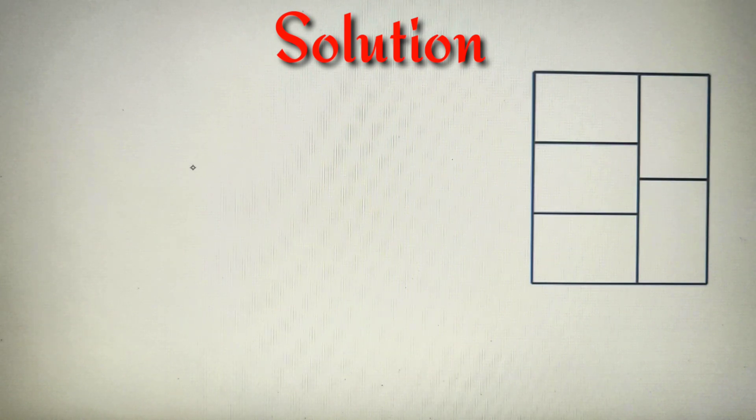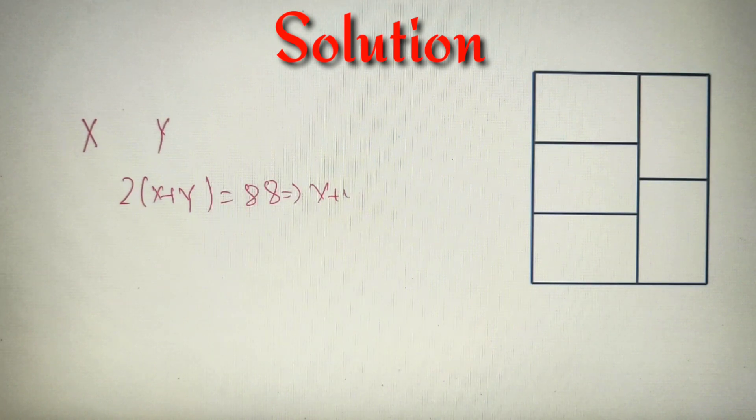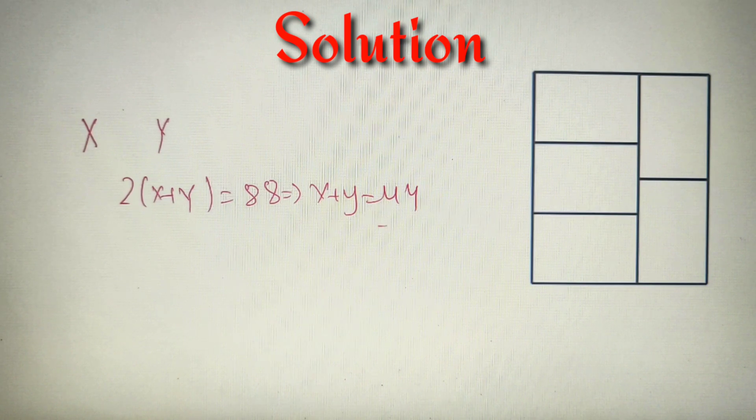According to the given question, we are provided that the perimeter of this given rectangle is 88. So if the length of the rectangle is capital X and the breadth is capital Y, then 2(X + Y) = 88, or X + Y = 44. So the sum of the sides of the rectangle is equal to 44.